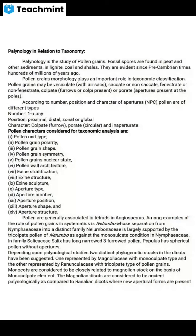Pollen grains may be vesiculate — meaning with air sacs (saccate) — or non-saccate, meaning without air sacs. They may also be fenestrate, meaning having numerous openings, or non-fenestrate. Irregular reticulated pollen is also a type.